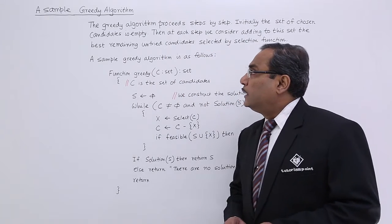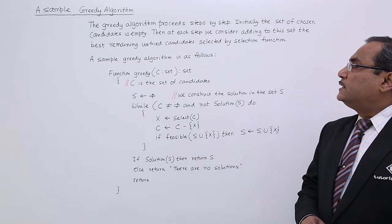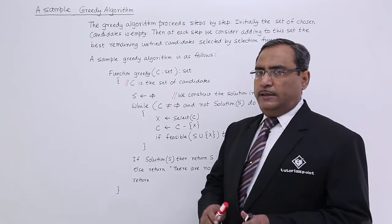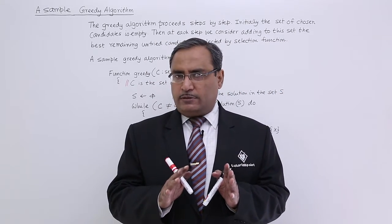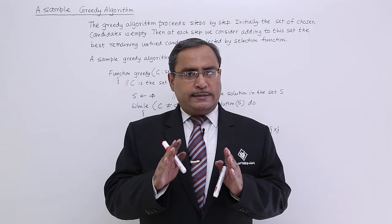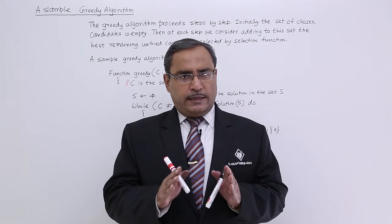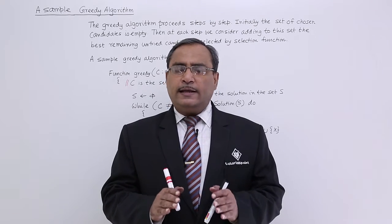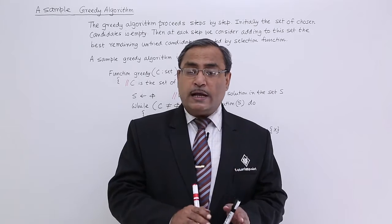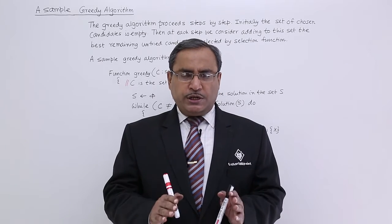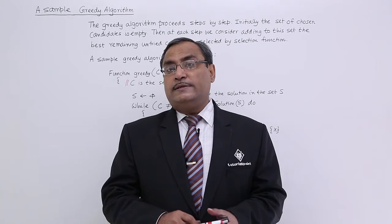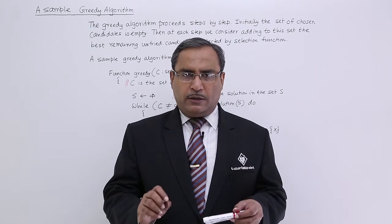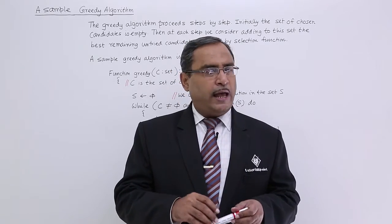The greedy algorithm proceeds step by step. Initially, the set of chosen candidates is empty. We have three sets: set number 1 is the set of candidates, set number 2 is the set of candidates considered and selected, and set number 3 is the set of candidates considered and rejected. Initially, the set of candidates considered and selected will remain empty, and from that state we begin with this algorithm.